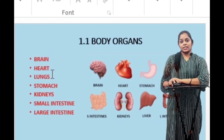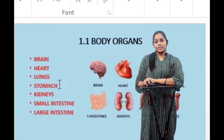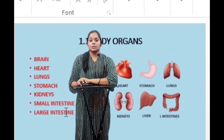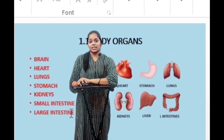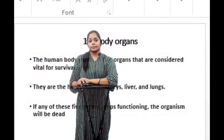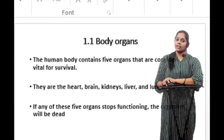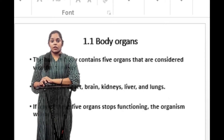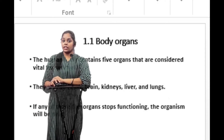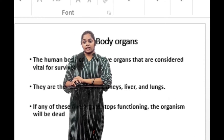heart, lungs, stomach, kidneys, small intestine, and large intestine. The human body contains five organs considered vital for survival: the heart, brain, kidneys, liver, and lungs. If any of these five organs stop functioning, the organism will not survive.